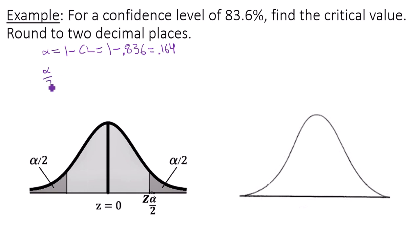Now alpha over 2 is this result we just found, 0.164 divided by 2. This gives us 0.082.